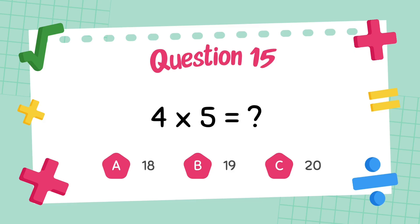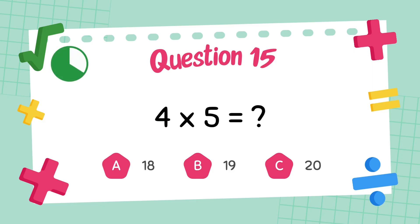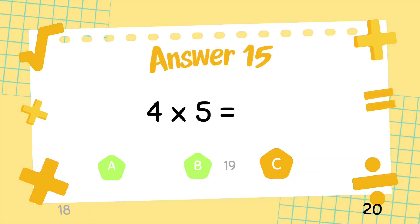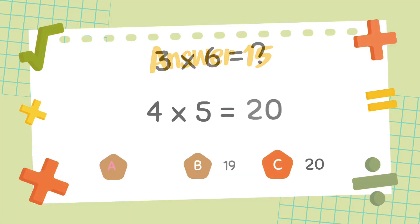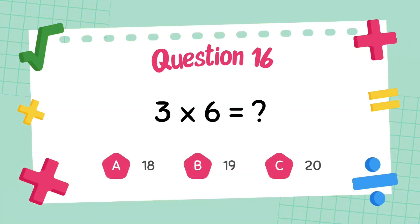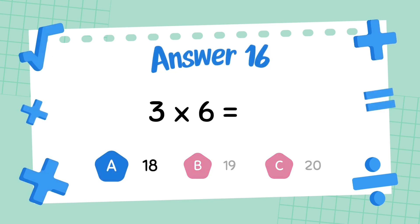What is 4 multiply 5? The answer is 20. What is 3 multiply 6? The answer is 18.